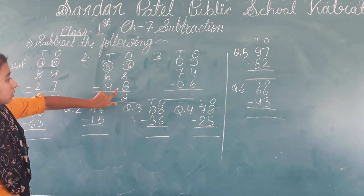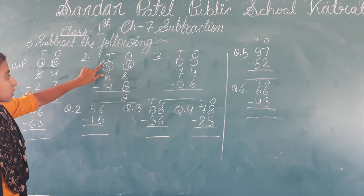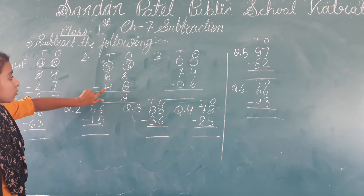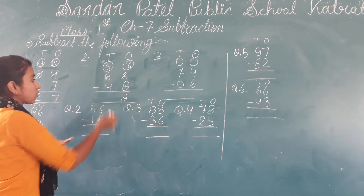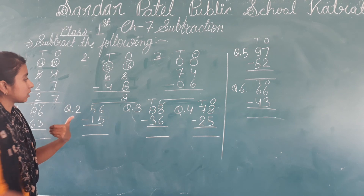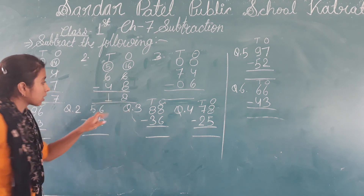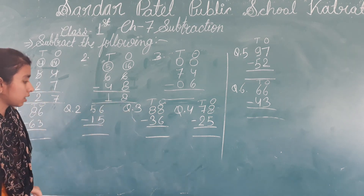Now for the tens place: the tens digit is now small after borrowing. We consider the tens: 5 minus 4 — that is 1. So the answer is 18.